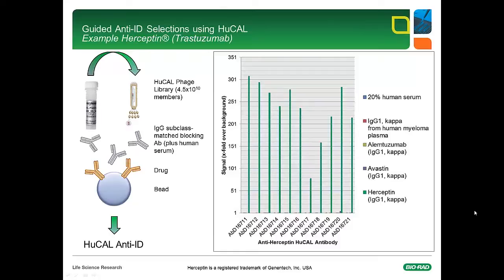Returning to the development of anti-idiotypic antibodies. As an example, the development of anti-idiotypic antibodies against the drug Herceptin or Trastuzumab is shown. For the selection process, the drug was immobilized on magnetic beads and incubated with the HuCAL library displayed on phage. An IgG subclass matched blocking antibody, plus human serum, was added during incubation, thereby removing all HuCAL antibodies that bind non-idiotypic regions of the drug antibody or that are cross-reactive to serum components. After the selection process, enriched antibodies were screened for their specific binding to Herceptin in an ELISA. As shown in the figure, 11 antibodies were identified that bind to Herceptin, but not to other drugs of the same isotype, and not to human serum.